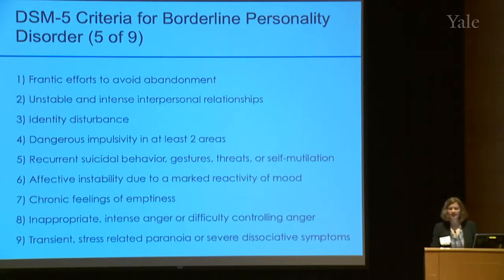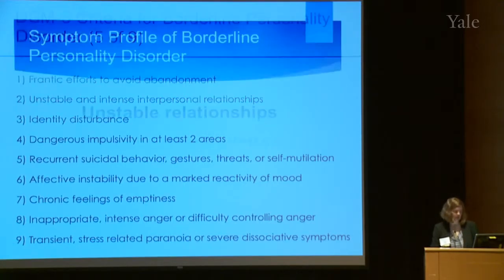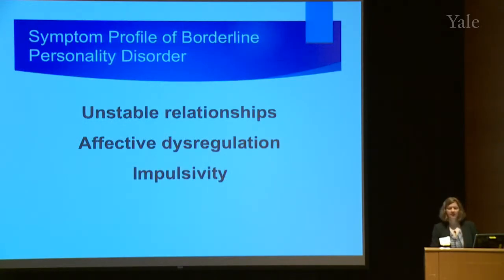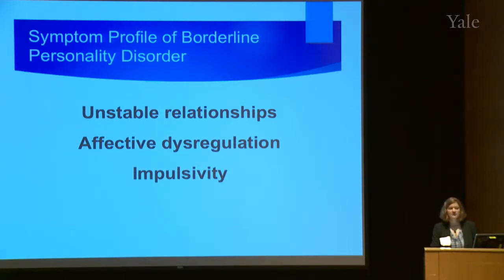If you look at this very heterogeneous mix of criteria, we find that we can kind of boil it down in some ways to three general areas of dysfunction: unstable relationships, affective dysregulation, and difficulties with impulse control. And as you listen to the presentations today, you'll see that different presentations are focusing on different aspects of the symptom presentation.